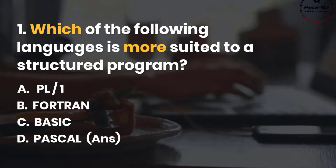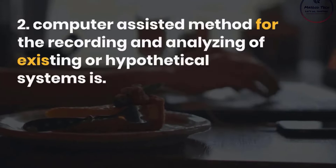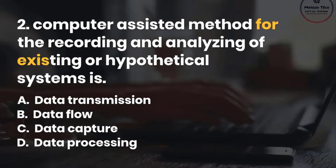Number 2. Computer assisted method for the recording and analyzing of existing or hypothetical systems is: A. Data transmission. B. Data flow. C. Data capture. D. Data processing. Correct answer is B.